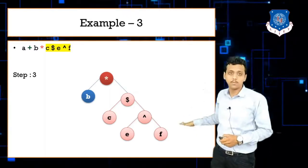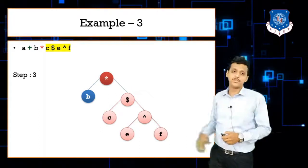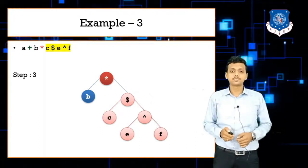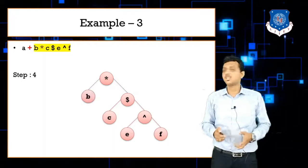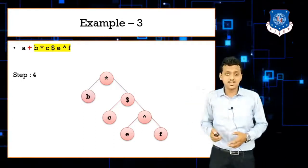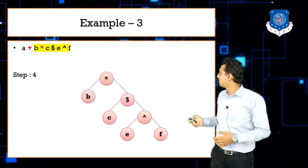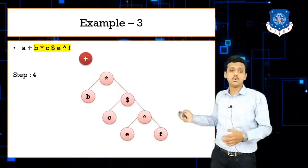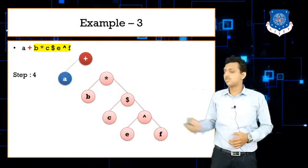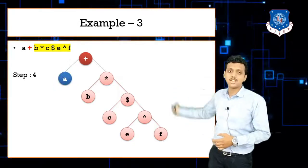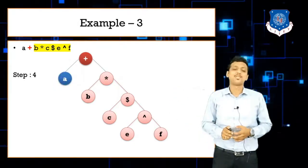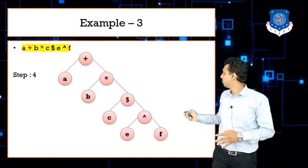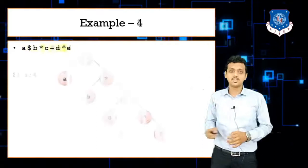Finally, plus is the last operator. A becomes the left child of plus, and the entire star sub-tree becomes the right child. This is the final answer for example three: plus at the root, a on the left, and the full sub-tree on the right.